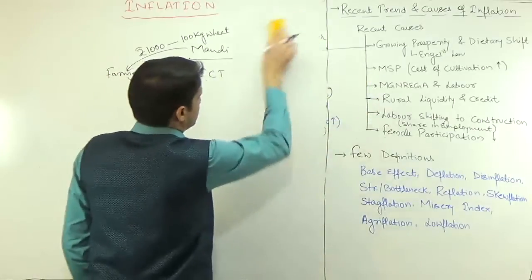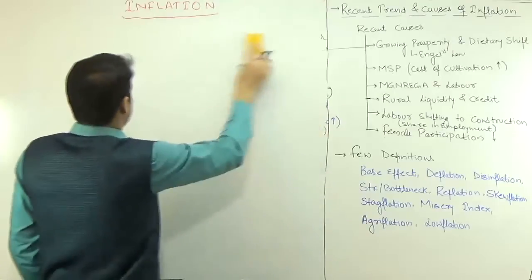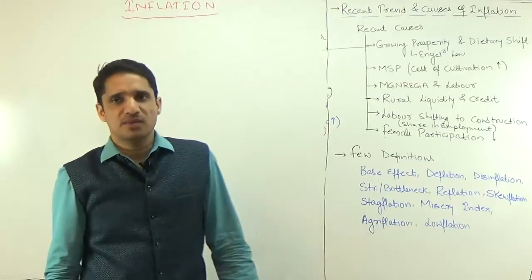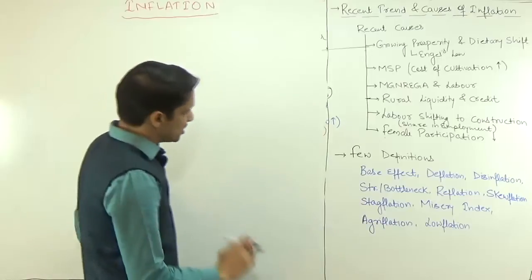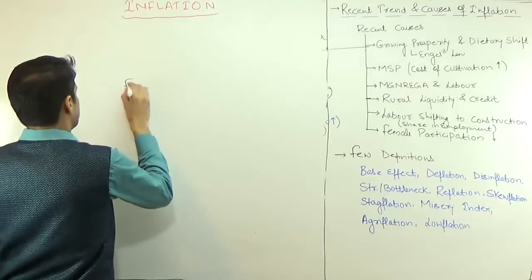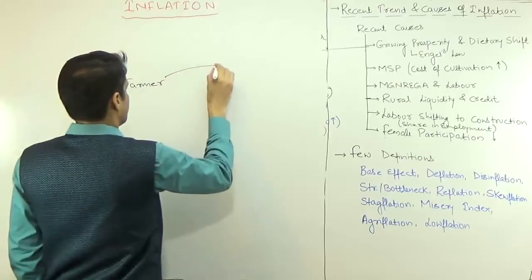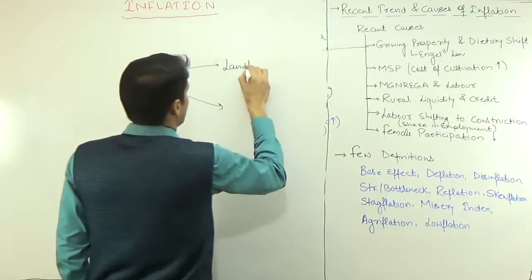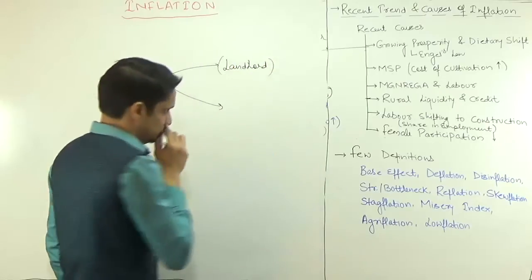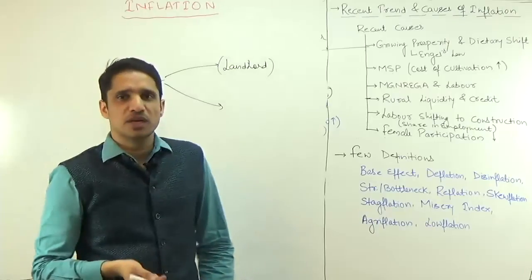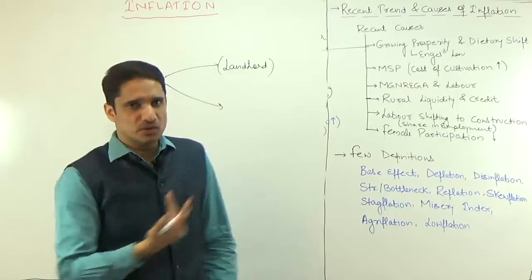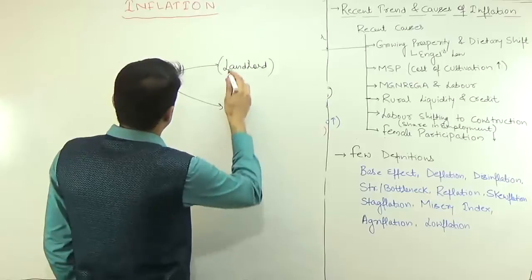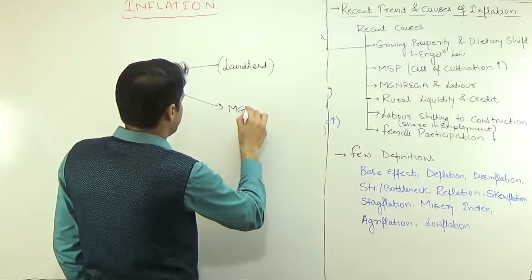The next cause is MGNREGA. From a socialist perspective it is one of the best schemes in the world, but from an economics perspective — since this is an economics class — we have to criticize it. A farmer has two options: working on a landlord's land, or working under MGNREGA. This competition between the two options has economic implications.